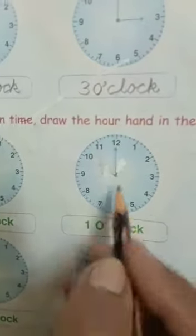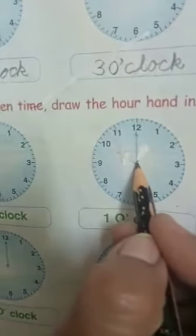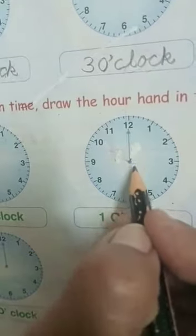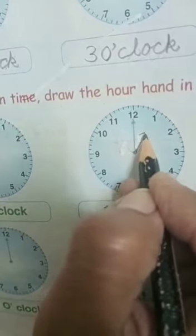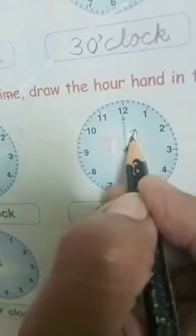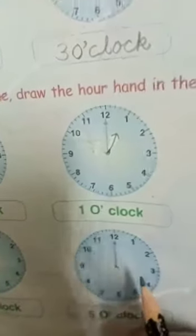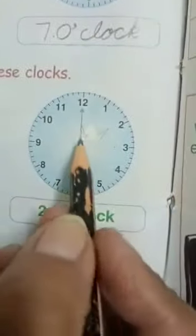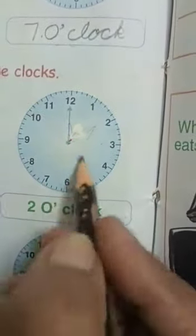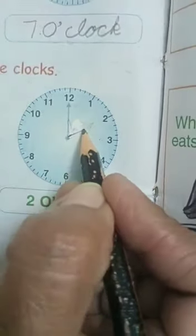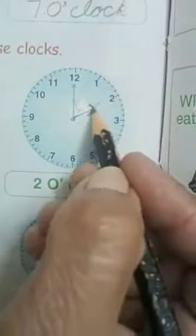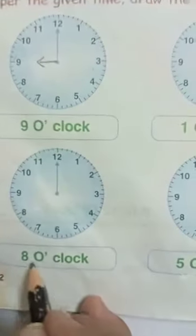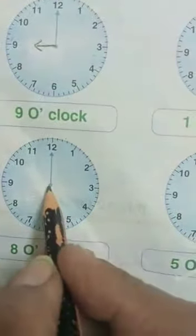Next — 1 o'clock. The minute hand is on 12. For 1 o'clock, we point the hour hand towards 1. Clear — it is 1 o'clock. Now next, 2 o'clock. We will point the hour hand towards 2. It is 2 o'clock. Clear.